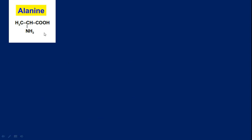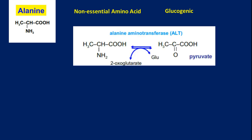Alanine's structure is relatively simple: CH3, CHNH2, COOH. It is a non-essential amino acid because it can be biosynthesized from pyruvate. It is a glucogenic amino acid — pyruvate gets converted to oxaloacetate, and oxaloacetate can enter into the gluconeogenesis pathway, as we have seen in the gluconeogenesis chapter. The key enzyme is alanine aminotransferase or ALT, which does the job of removing the amino group from alanine.